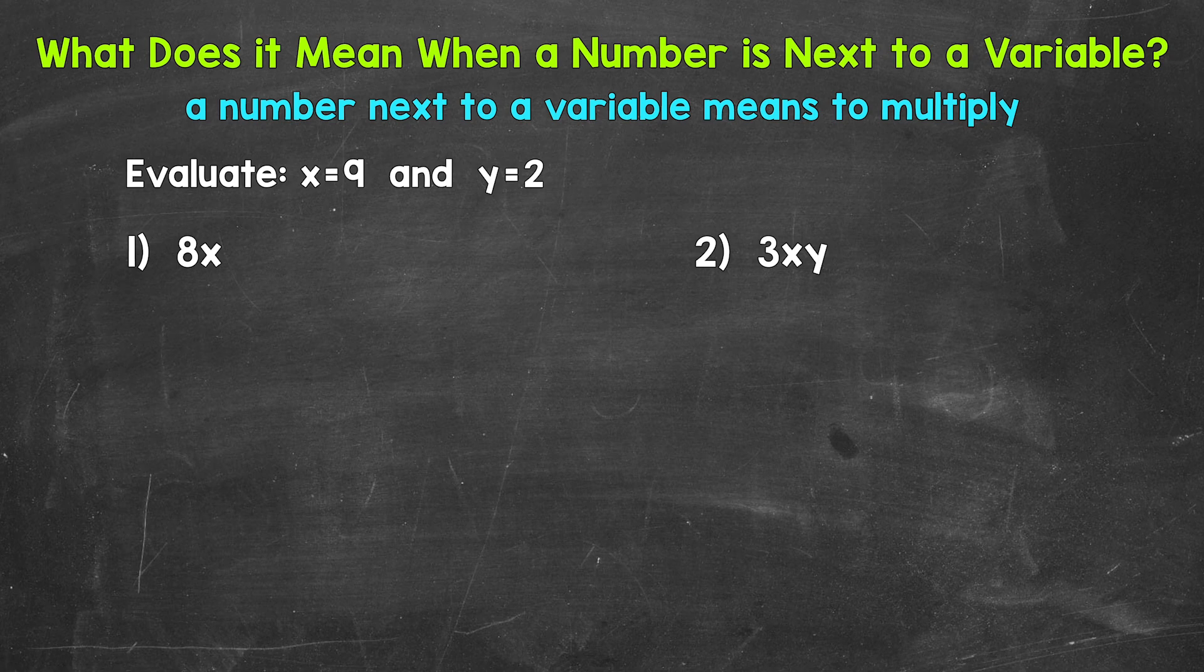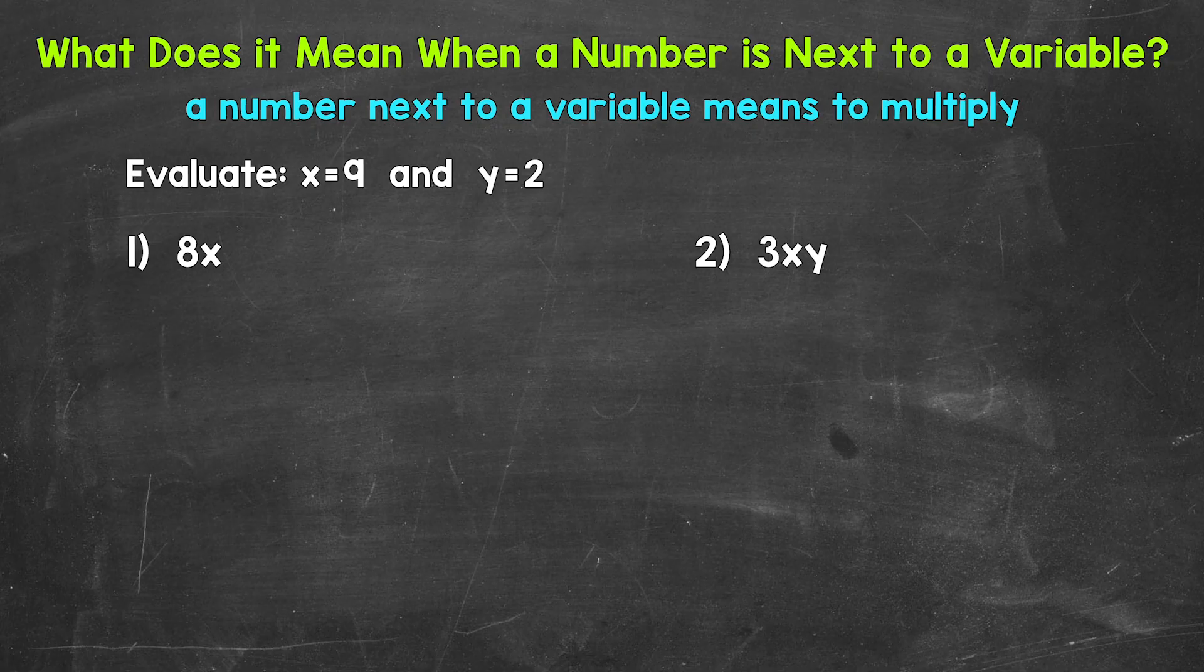Starting with number 1, where we have 8x. We have a number, 8, next to a variable x. This means they are being multiplied. So we have 8 times x. The first thing that we need to do in order to evaluate this expression, we need to replace or plug in the given value for the variable. This is called substitution. For the examples in this video, we are going to evaluate for when x equals 9 and y equals 2.